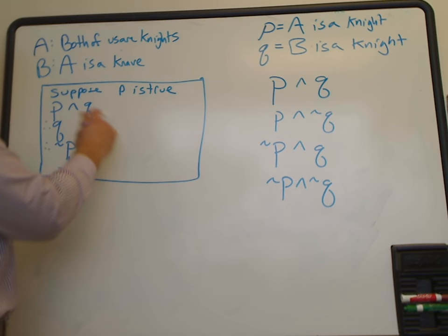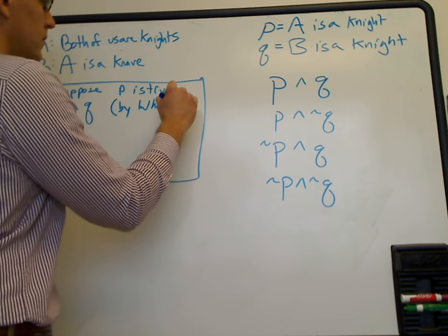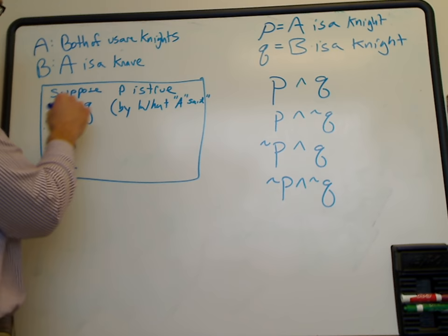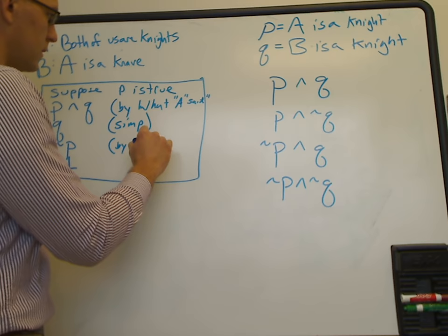Our first supposition doesn't need justification. But P and Q we got from what A said. The next line — Q — is just a simplification. And not-P we got from what B said.